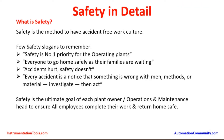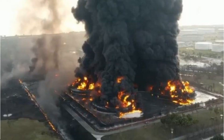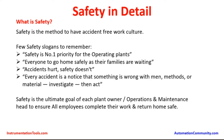Safety is the ultimate goal of each plant owner, operations and maintenance head, to ensure all employees complete their work and return home safe. In industrial environments where large quantities of hydrocarbons, gas, oil, and toxic chemicals are used, there are chances of accidents inside the plant facilities. It is the sole responsibility of operation heads to operate the plants safely and ensure that all employees are safe and get back home.